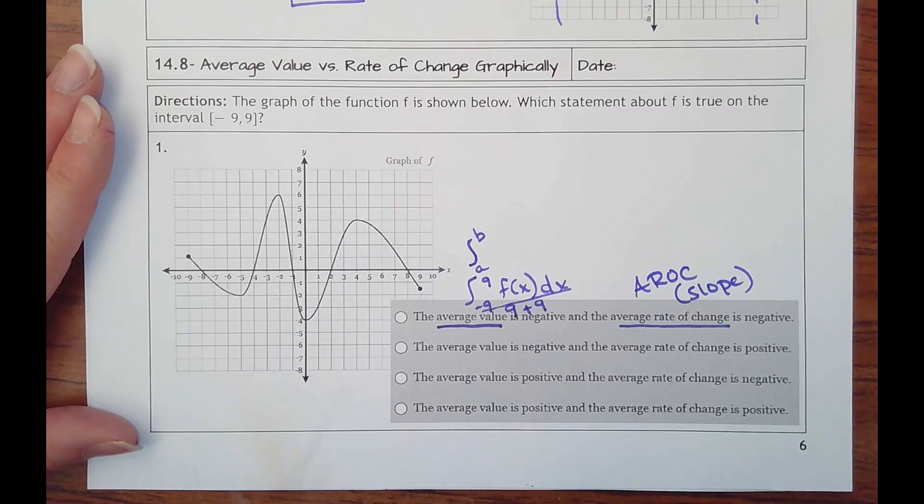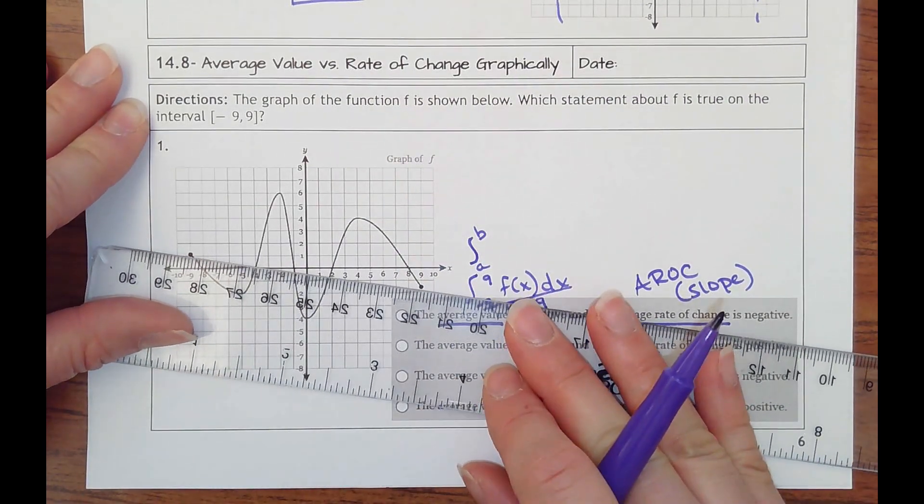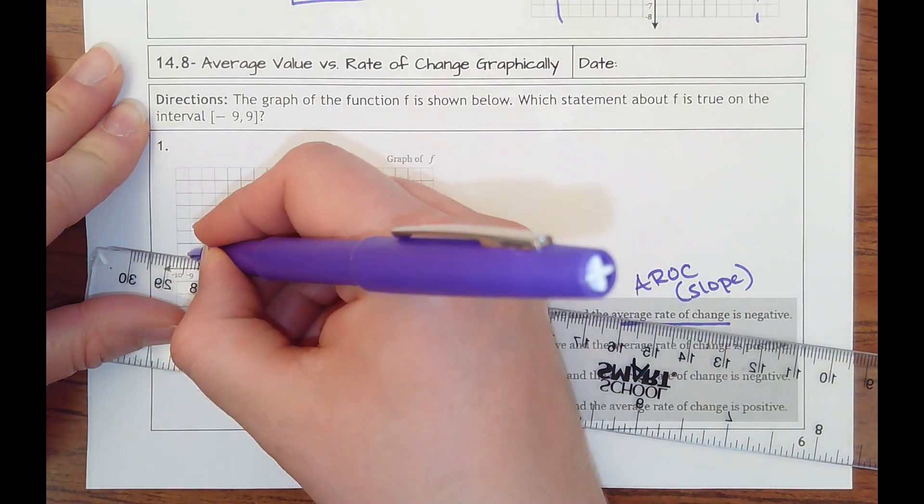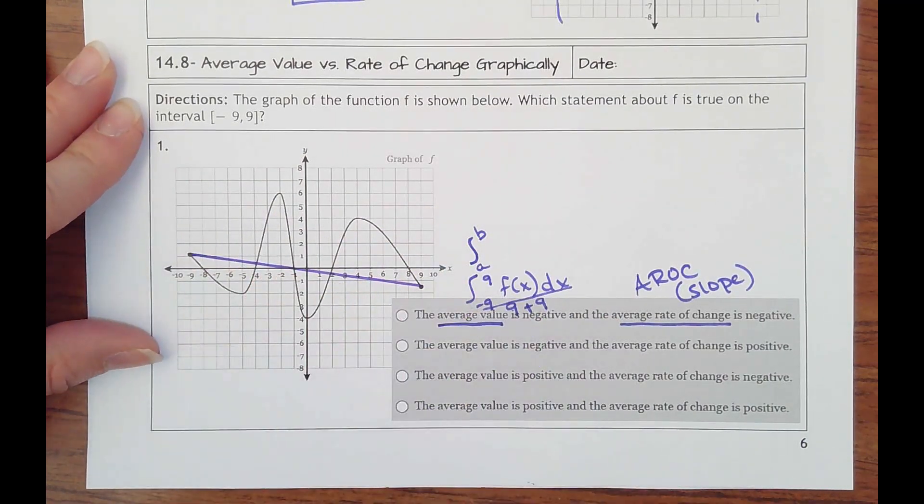So that's literally, if I take a ruler and I want to connect the point when x is negative 9 to when x is positive 9, I'm talking about this slope, which is obviously decreasing, so it's negative.